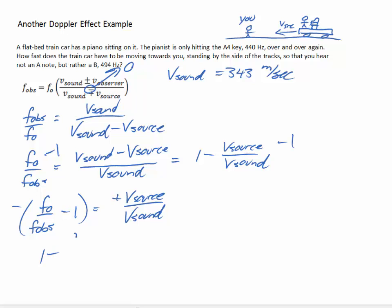F0 is 440 hertz, the frequency actually of the vibrating string on the piano, and the frequency that is observed by you standing by the side of the tracks, 494 hertz.